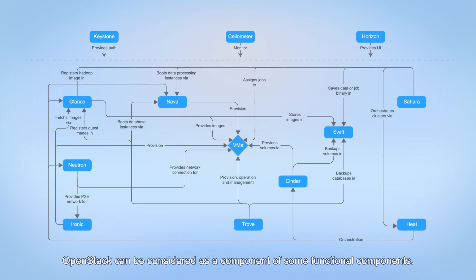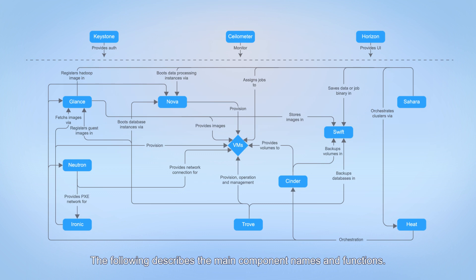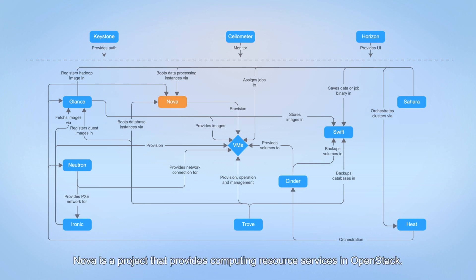OpenStack can be considered as being composed of multiple functional components. The following describes the main component names and functions. Nova is a project that provides computing resource services in OpenStack. It manages the lifecycle of VMs and other computing resources.